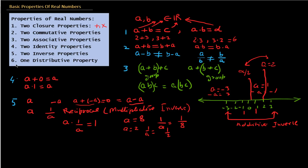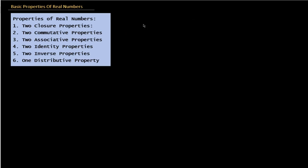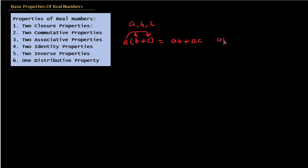The last property is the distributive property. Suppose there are three numbers A, B, and C written as A multiplied by the sum of B and C — that is, A times (B plus C). The distributive property says you can distribute A over B and C: you first multiply A with B, then add the product of A and C. So A times (B plus C) equals AB plus AC. This is also called opening the brackets.